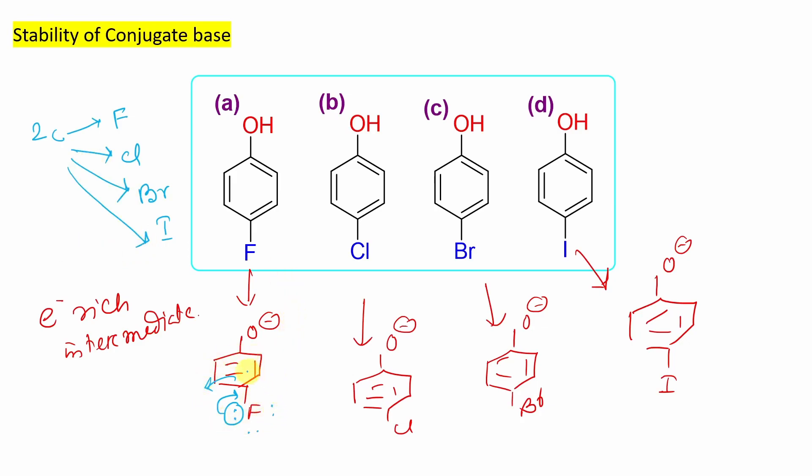Now this is one. Whatever I have shown here, this donation is called plus R effect. By the way, for halogen plus R effect is less dominant over minus I. Means minus I is more dominant. So halogens in conclusion are withdrawing in nature. So it means that it will help to stabilize these phenoxide compared to the parent phenol molecule.